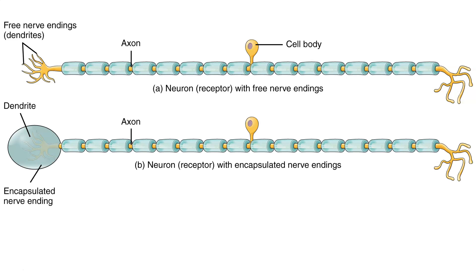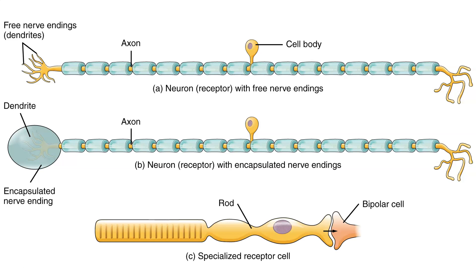They might also be associated with supporting cells, like you see here. Another possibility is having a highly specialized sensory cell that is able to sense the environment and pass that information along to a neuron, eventually taking that information to our central nervous system to be processed and interpreted.